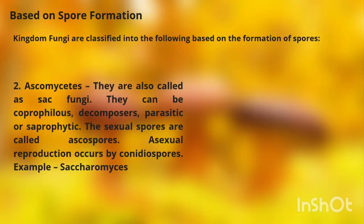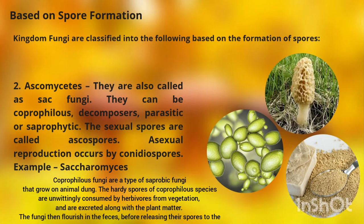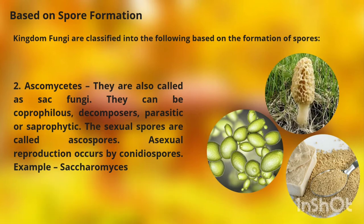Number two is Ascomycetes or Ascomycota, also called sac fungi. They can be coprophilous, decomposers, parasitic, or saprophytic. The sexual spores are called ascospores, and asexual reproduction occurs by conidial spores. An example is Saccharomyces, or yeast. We also have Morchella, the true morels — a distinctive fungi with a honeycomb appearance due to a network of ridges composing their caps. Morels are prized by gourmet cooks, particularly in French cuisine.